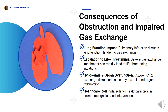When the obstruction within the pulmonary artery becomes substantial, it can lead to a condition known as pulmonary infarction — the death of lung tissue due to inadequate blood supply caused by the embolic blockage. This seriously impacts overall lung function and interferes with gas exchange. Severe impairment of gas exchange can rapidly escalate to a life-threatening scenario, with disruption in oxygen and carbon dioxide exchange leading to hypoxemia and subsequently organ dysfunction.